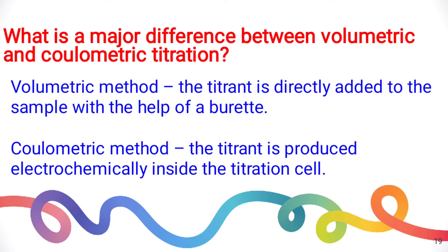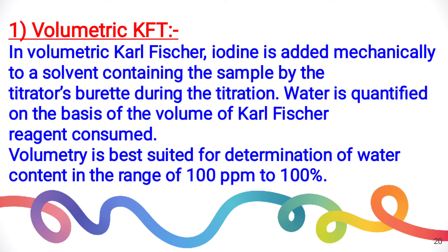What is the major difference between volumetric and coulometric titration? In the volumetric method, the titrant is directly added to the sample with the help of the burette, as we have seen previously. In volumetric Karl Fischer titration, iodine is added mechanically to a solvent containing the sample by the titrator burette during the titration. Water is quantified on the basis of the volume of Karl Fischer reagent consumed. Volumetric is suited for determination of water content in the range of 100 ppm to 100%.